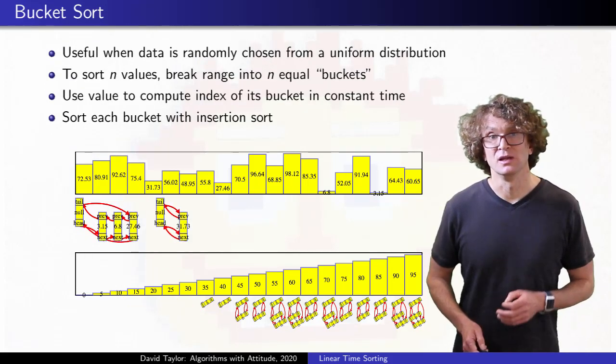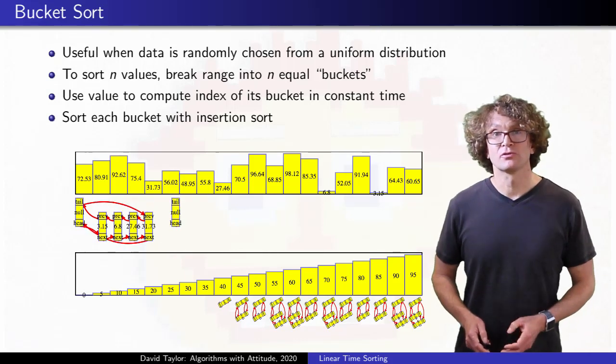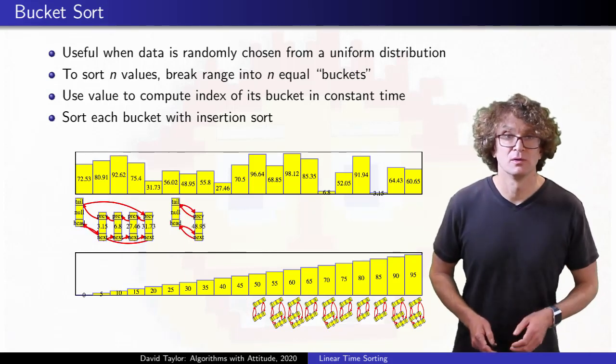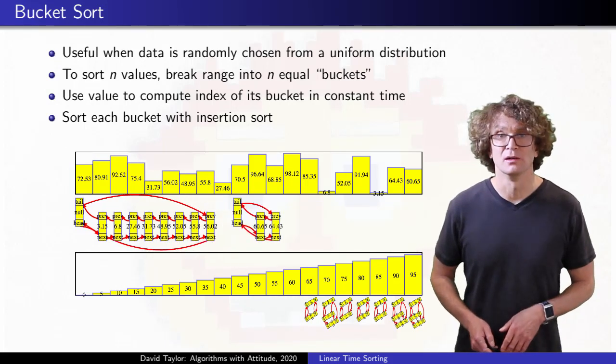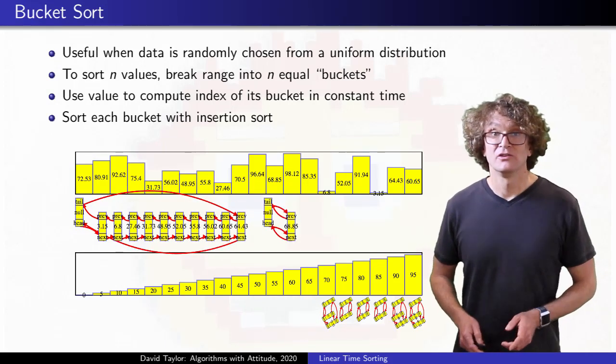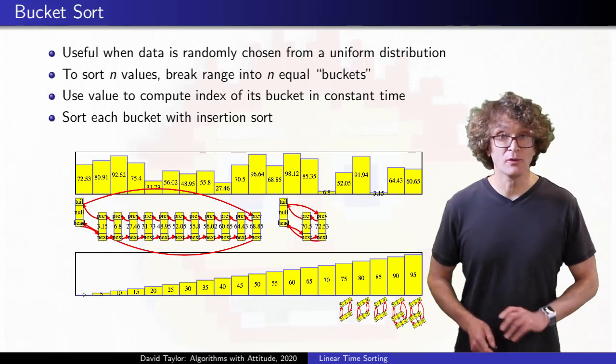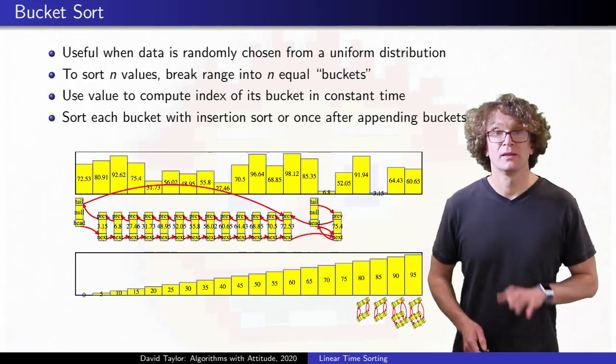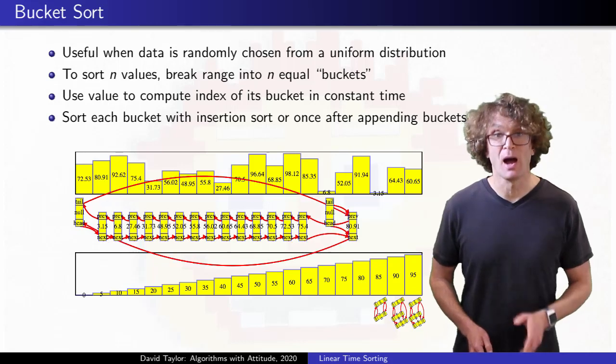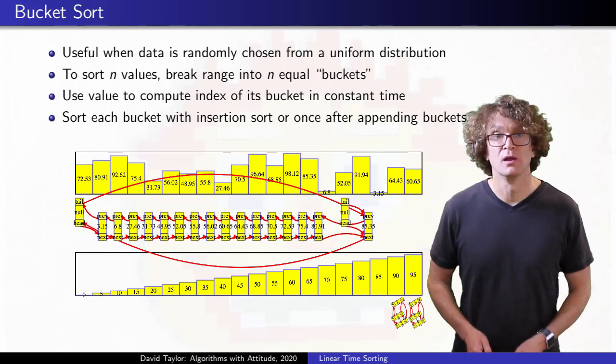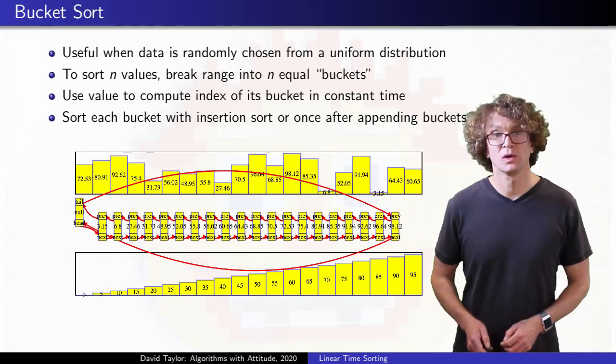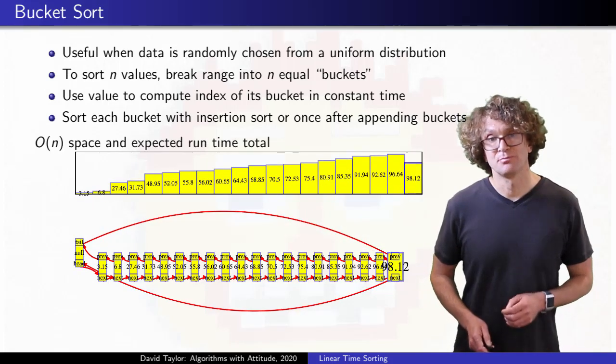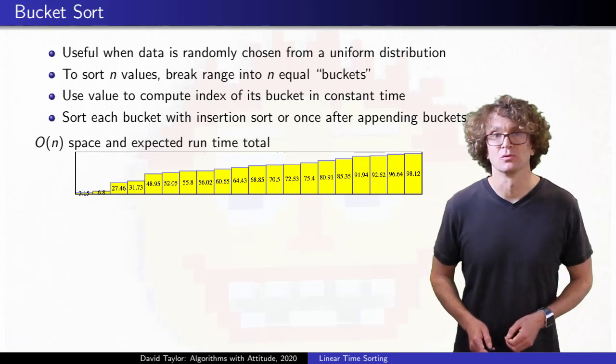Once you have each bucket sorted individually, you can just go through them and copy them back into the original array. I show the linked lists being concatenated to each other instead. A third option is to combine the lists without sorting each one individually, and then run insertion sort on the combined list which is almost sorted. Because it is almost sorted, insertion sort will finish the job quickly. Each of these options takes expected linear time total.